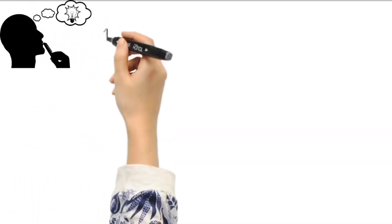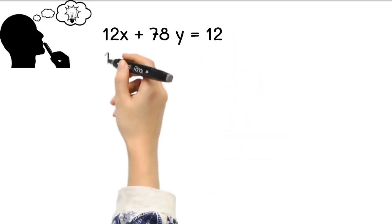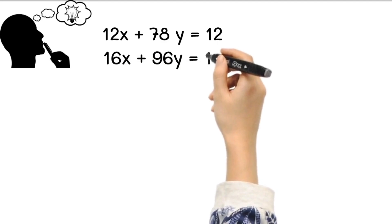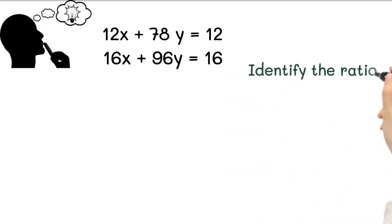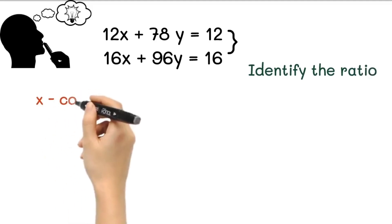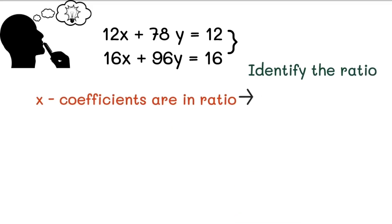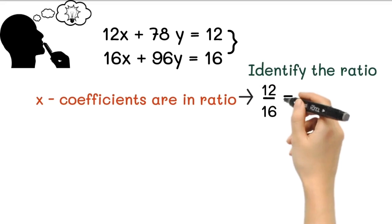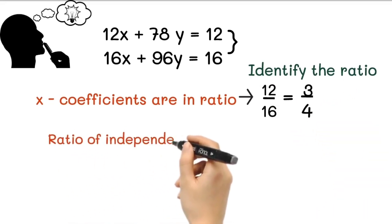Let's take the next example: 12x plus 78y equals 12 and 16x plus 96y equals 16. Let's identify the ratio. If you observe both equations, you will see that the x coefficients are in ratio. Take the ratio: 12 upon 16 equals 3 upon 4.